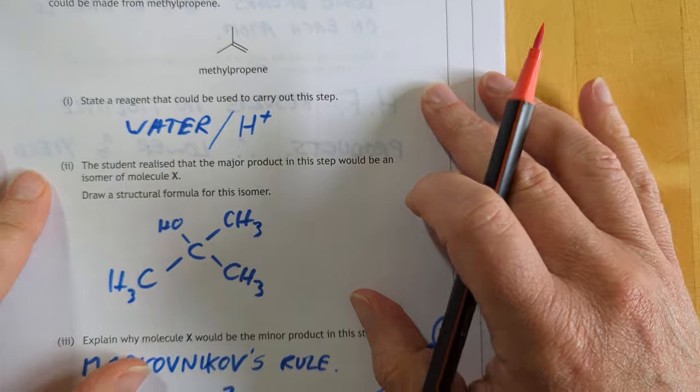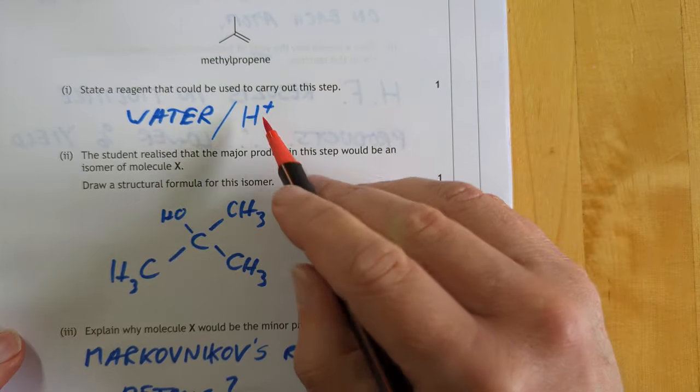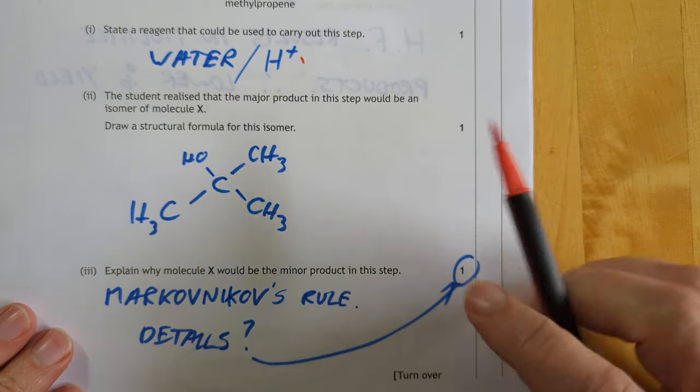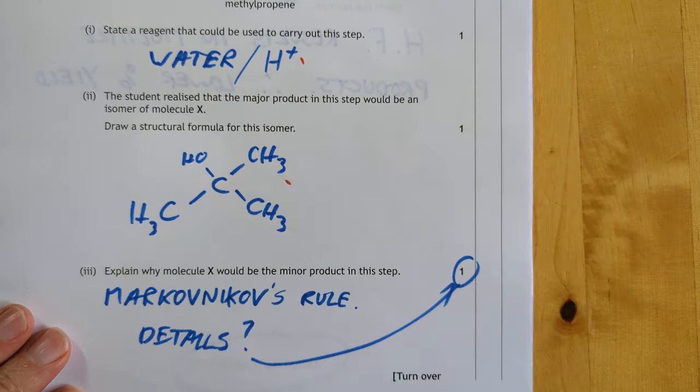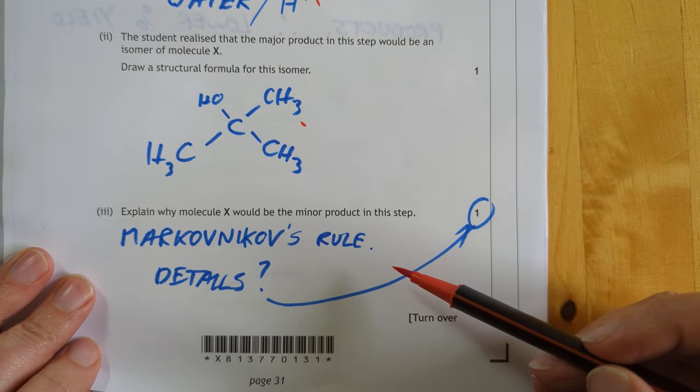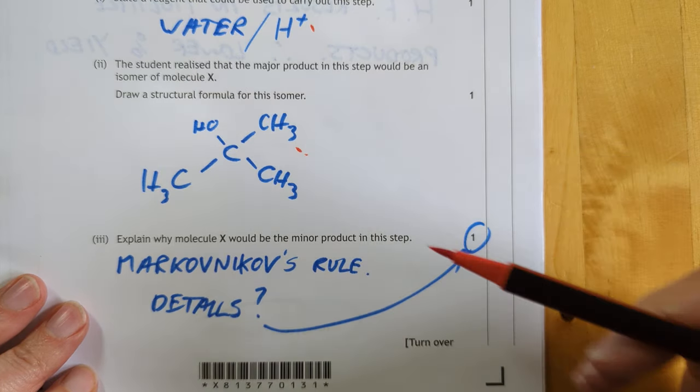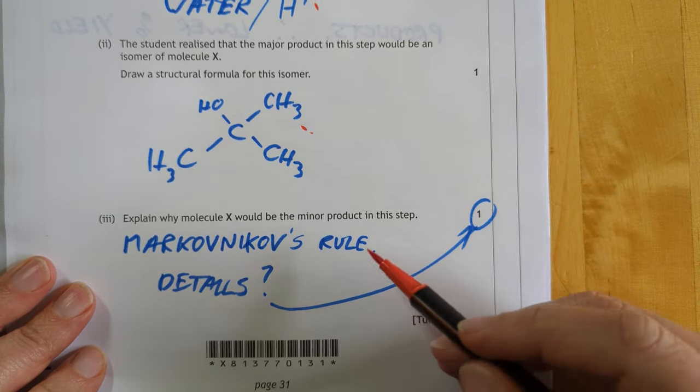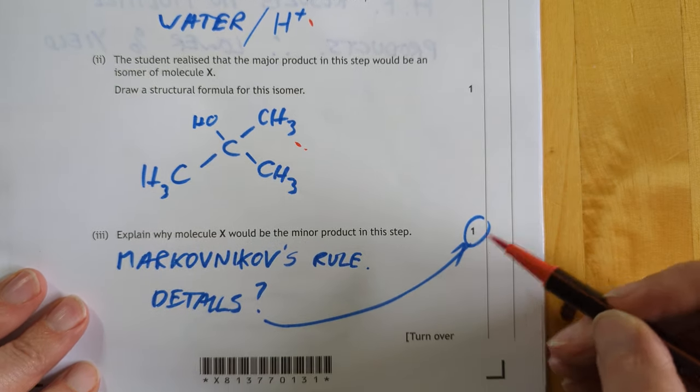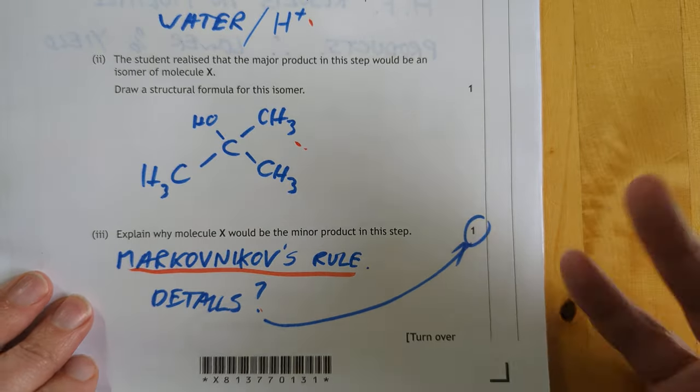That's easy. That is water and an acid catalyst. I think a lot of us might forget to add the acid catalyst. I think I forgot to add it the first time around. That is a structural form for the isomer. Explain why you wouldn't get much of your ex and you would get loads of this instead. That's because of Markovnikov's rule because the hydrogen that you're adding will go and join the carbon that already had loads of hydrogens in it. I think, is it enough to say that? Details? Don't know.